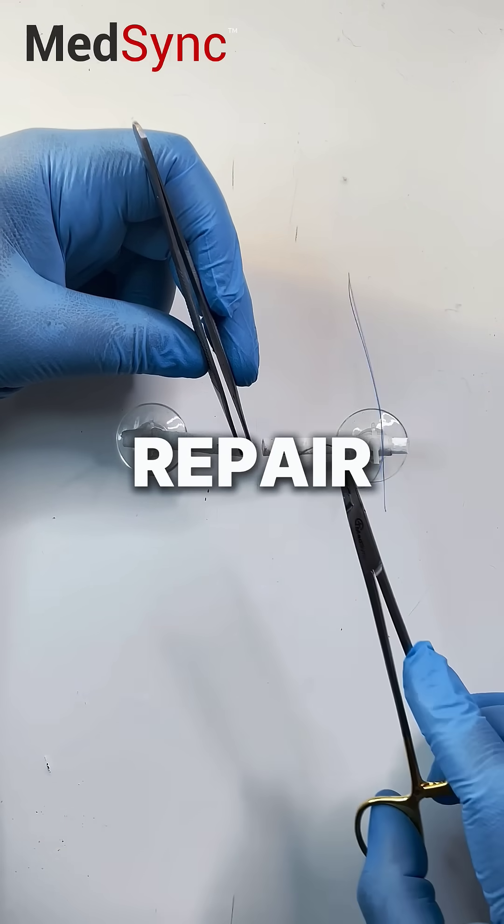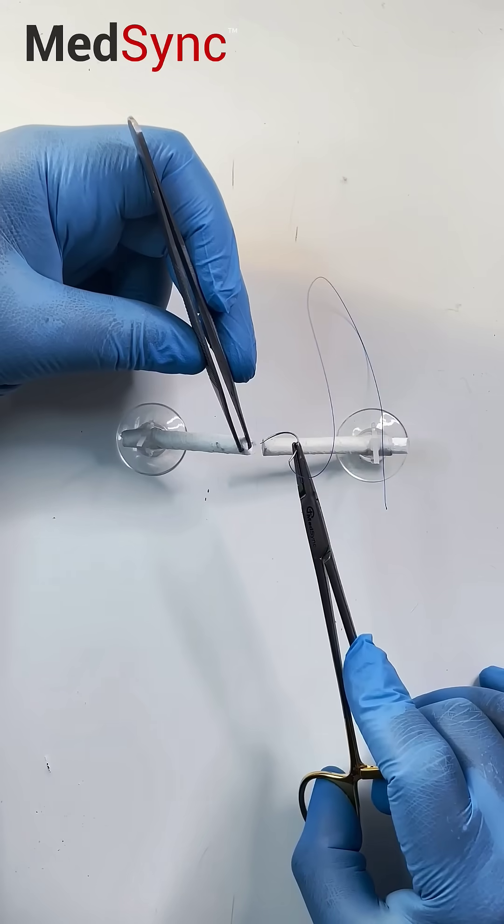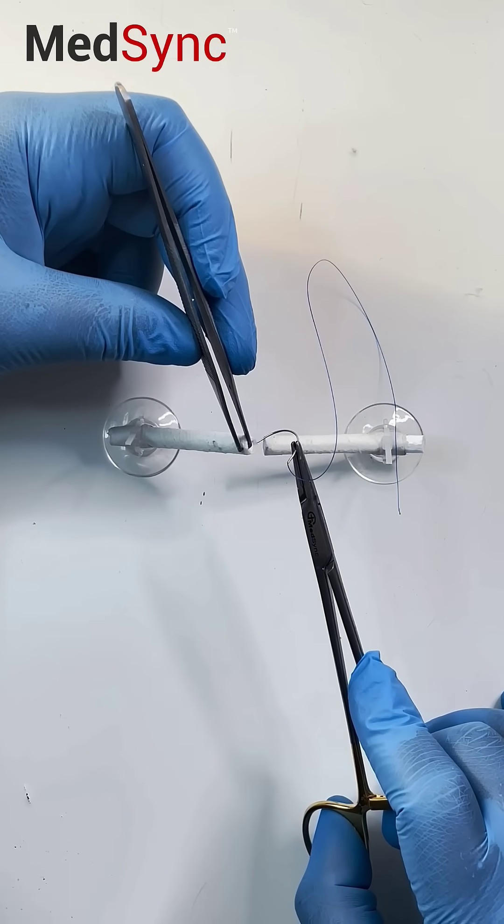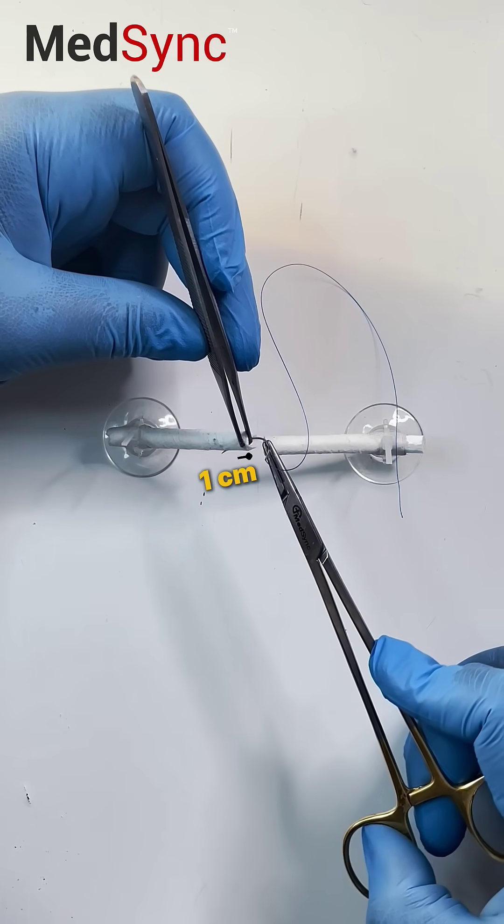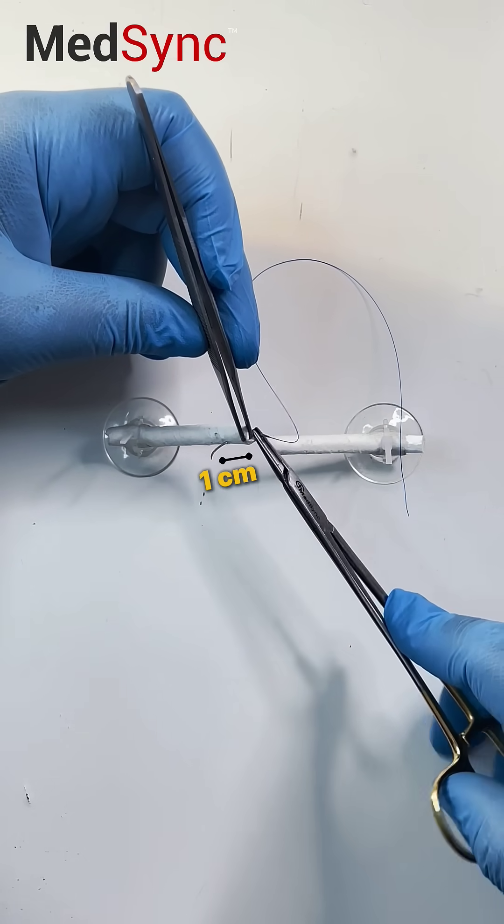The cruciate tendon repair is a favorite for many. You start in the middle so that your knot remains buried. Go one centimeter obliquely across the tendon.